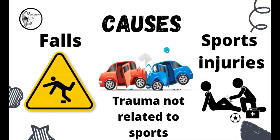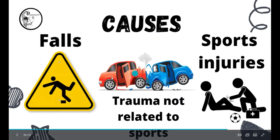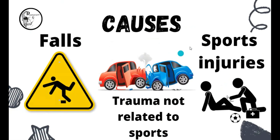The causes of shoulder joint dislocation are easy to remember: falls on an outstretched hand, trauma unrelated to sports such as a road traffic accident or a sudden blow to the shoulder, and sports injuries which commonly happen during high-intensity sports like football or cricket — any unexpected fall or impact can cause shoulder dislocation.